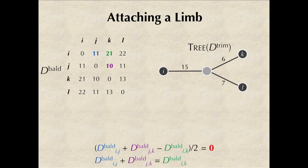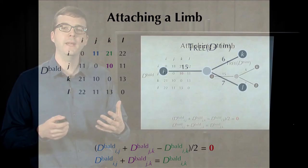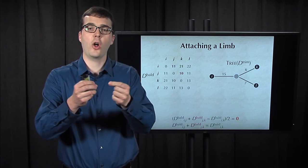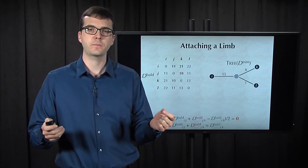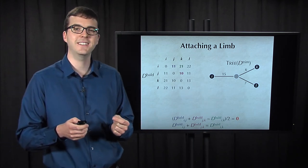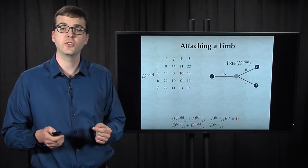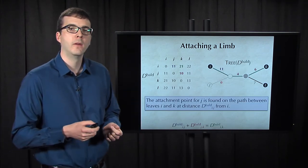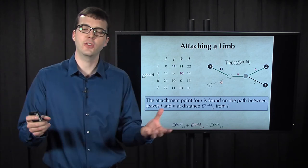So if we move D bald IK to the right side of this equation, this means that D bald IK is equal to the sum of D bald IJ and D bald JK. So how do we interpret this formula? Well it means that the attachment point for J must occur somewhere along the path from I to K. And specifically it means that this attachment point must occur at distance D bald IJ which is equal to 11 from leaf I.